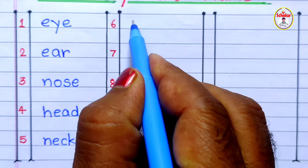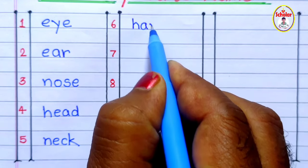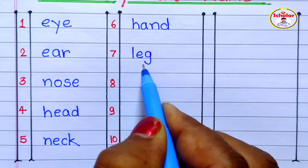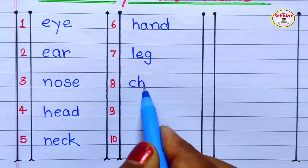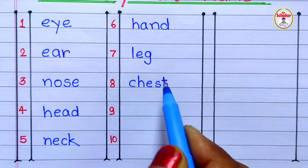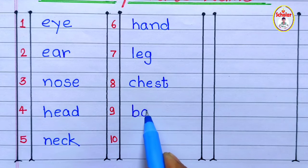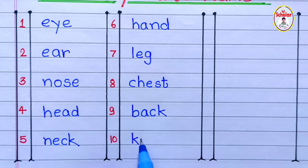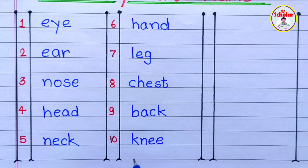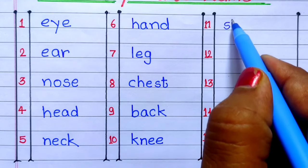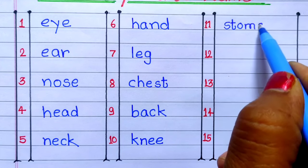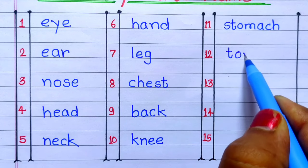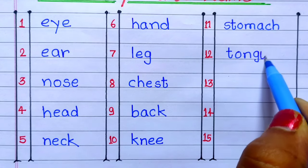H-A-N-D Hand. L-E-G Leg. C-H-E-S-T Chest. B-A-C-K Back. K-N-E-E Knee. S-T-O-M-A-C-H Stomach. T-O-N-G-U-E Tongue.